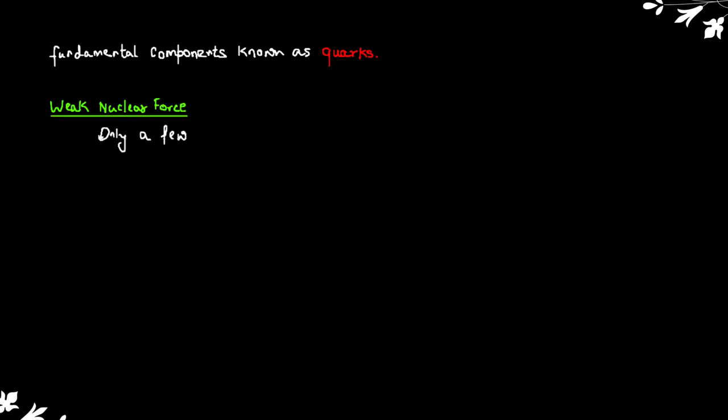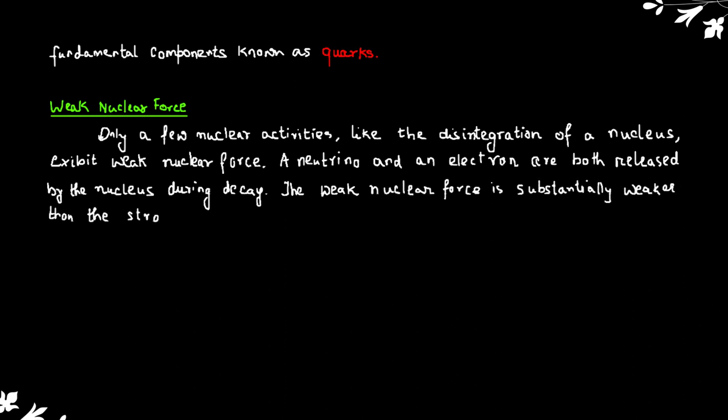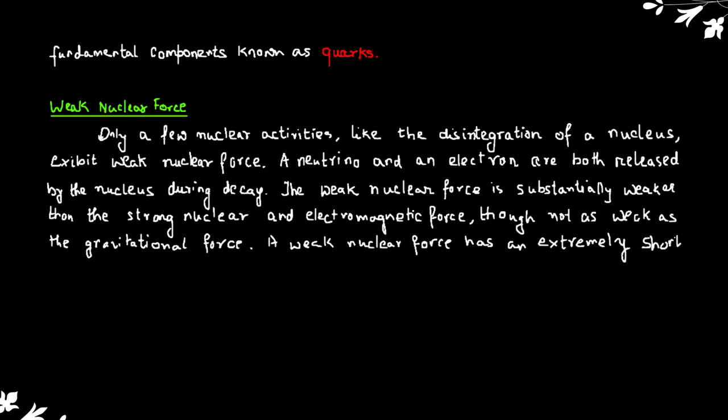Weak nuclear force. Only a few nuclear activities like disintegration of a nucleus exhibit a weak nuclear force. The neutrino and an electron are both released by the nucleus during decay. The weak nuclear force is substantially weaker than the strong nuclear and electromagnetic forces, though not as weak as the gravitational force. A weak nuclear force has an extremely short range, on the order of 10 raised to the power of negative 16 meters.